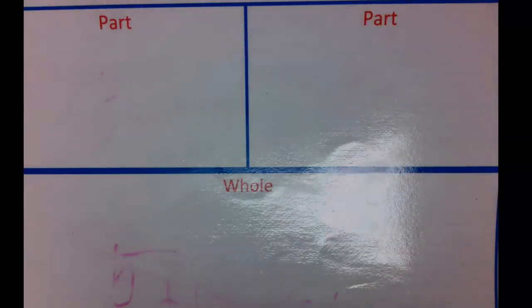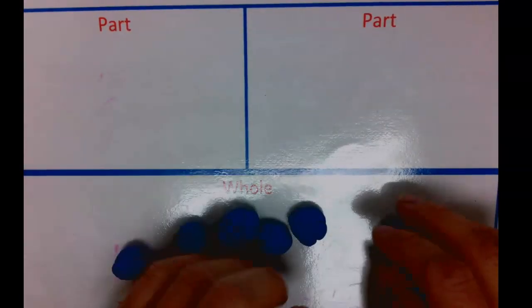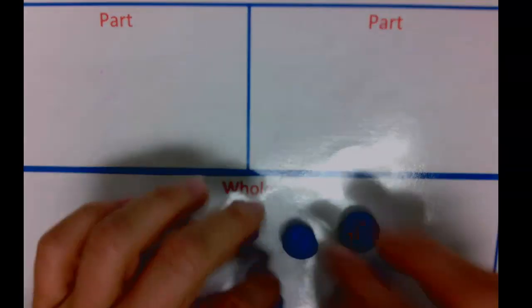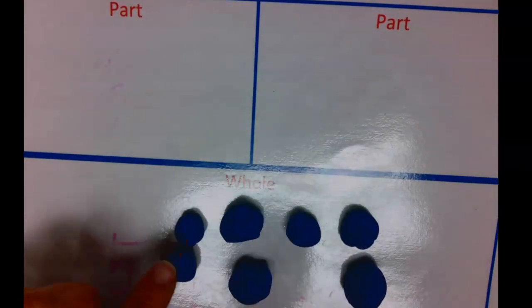Another way to go about this would be by using a part-part-whole map. Down in the whole, that's the number that we're going to start with. Let's see, count with me. I have one, two, three, four, five, six, seven.